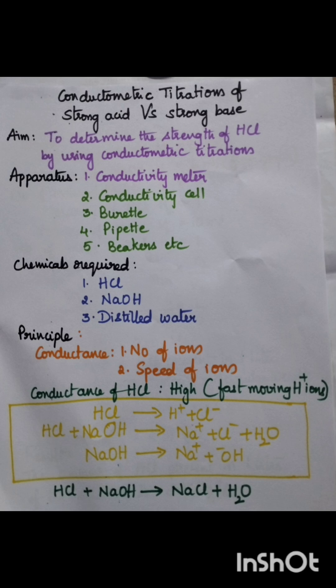Conductometric titrations generally involve the determination of end point by the measurement of conductance. A conductivity meter is used. HCl is a good example for strong acid and NaOH is a good example for strong base.